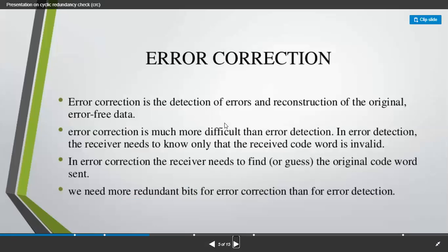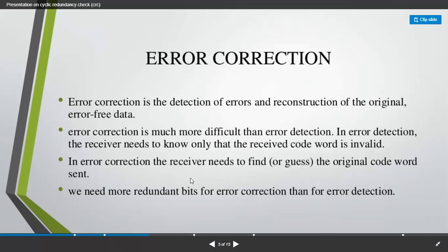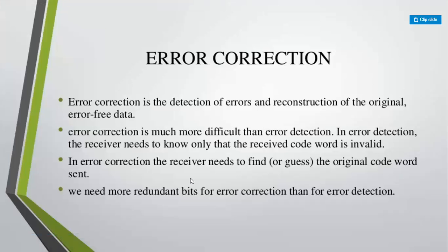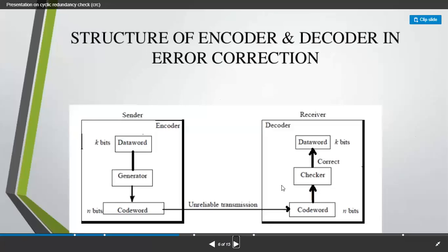We have to find out how error detection is going to take place. If there are any errors, we have to reconstruct the original error-free data and retransmit it through the same channel. It is very difficult to find out errors because the receiver only has the received code, which may be invalid — he will not know the original code. But he can guess that whatever has been sent is not the original code, through an algorithm that checks redundant bits of data.